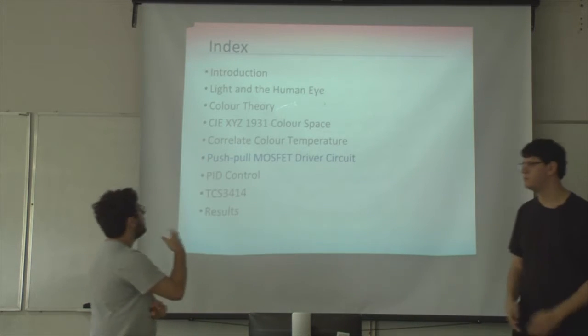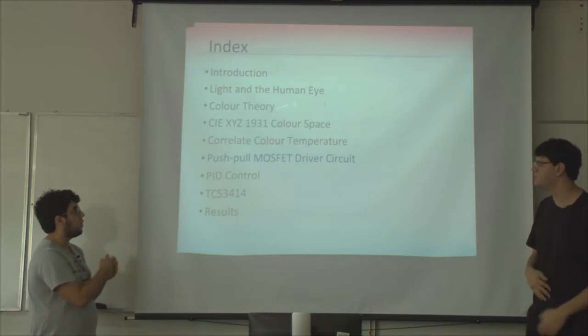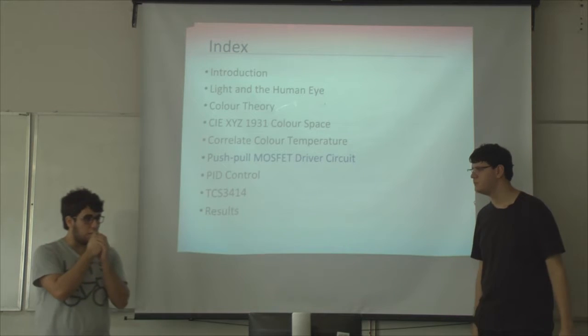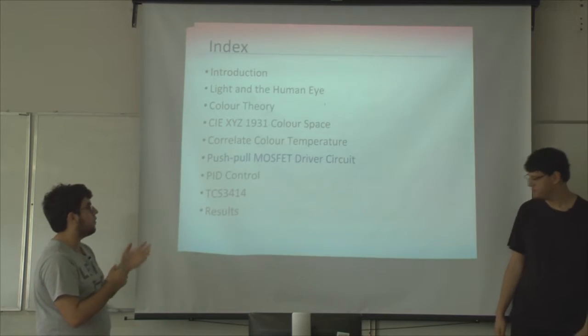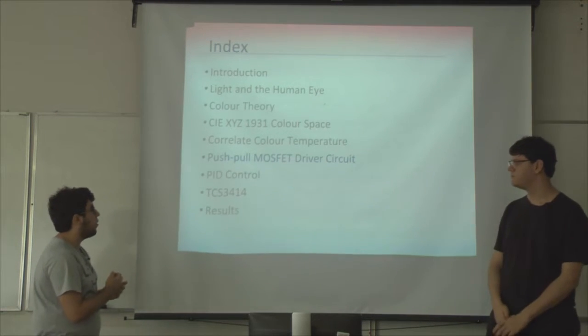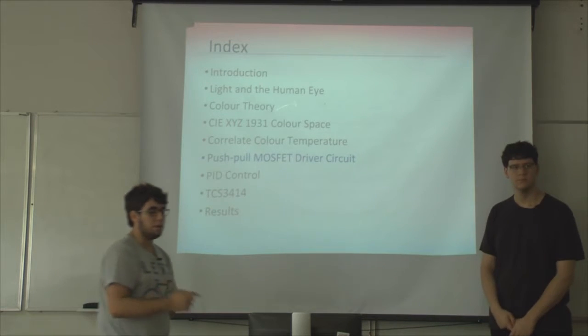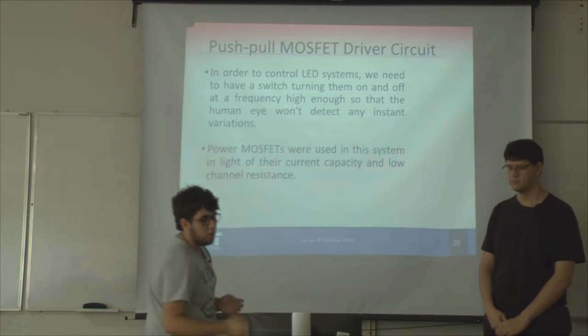Having spoken about the theory behind the control system, about color temperature and color intensity, we are going to speak about some of the electronic components that we use to make the control system.